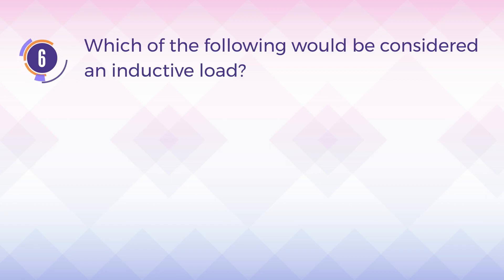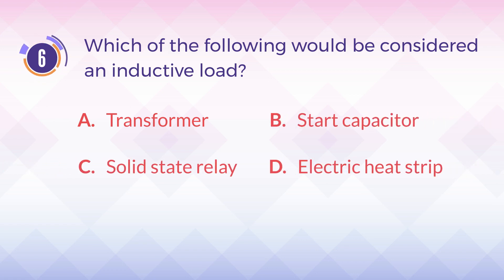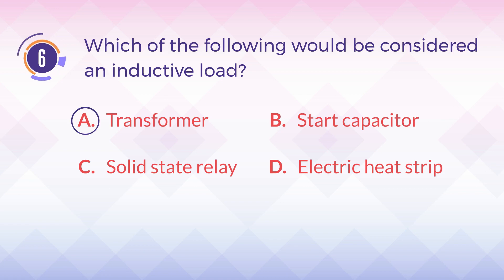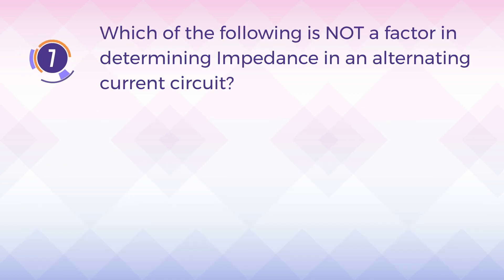Number six: which of the following would be considered an inductive load? A) transformer, B) start capacitor, C) solid state relay, D) electric heat strip. The correct answer is A) transformer. Explanation: an inductive load is a load consisting of a coil of wire which will cause current to lag voltage, such as a motor or transformer.